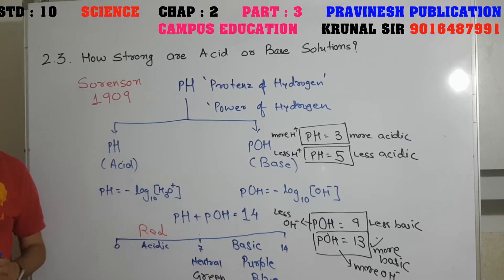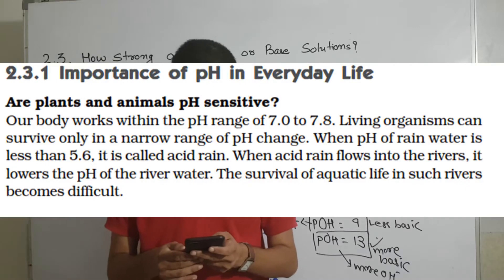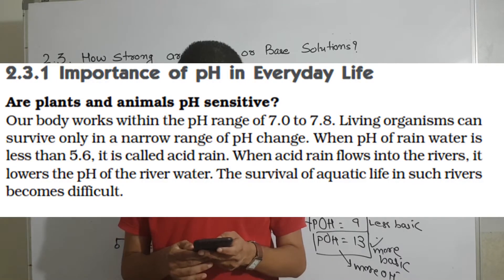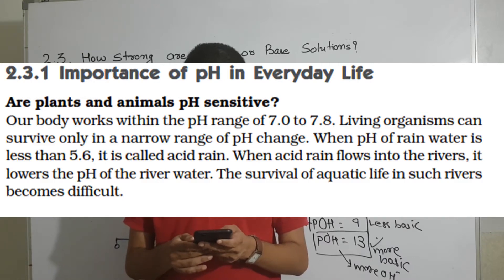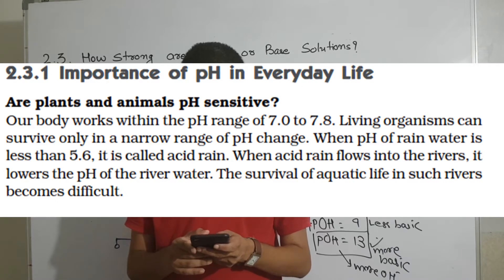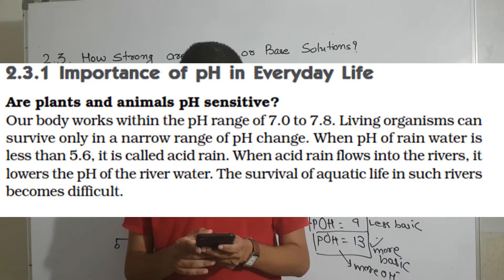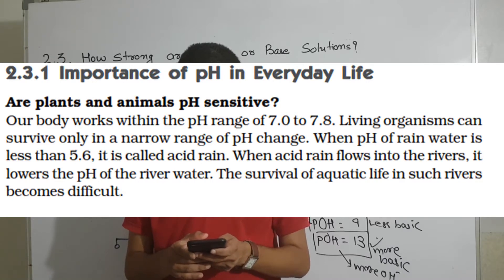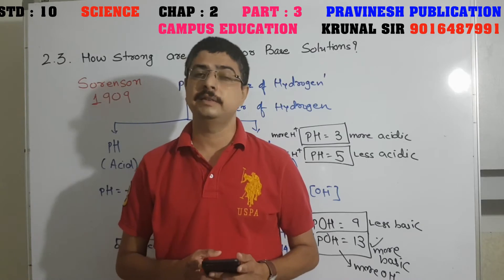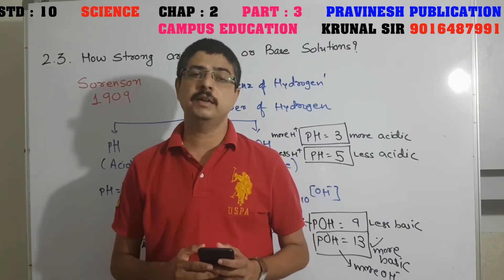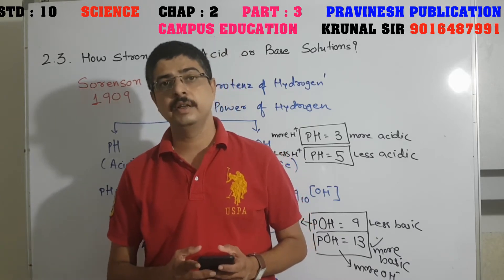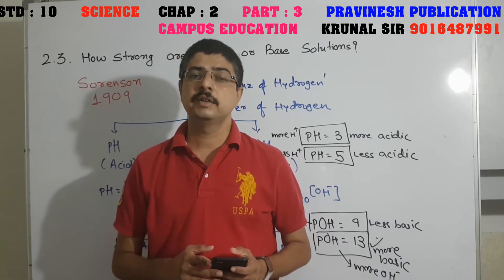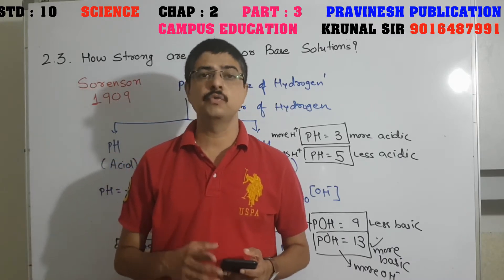Now we will understand the importance of pH in our daily life — Topic 2.3.1. Plants and animals are pH sensitive. Our body works within the pH range of 7 to 7.8. Living organisms can survive only in a narrow range of pH change. When the pH of rain water is less than 5.6, it is called acid rain. When acid rain flows into rivers, it lowers the pH of the river water, and the survival of aquatic life in such rivers becomes difficult.